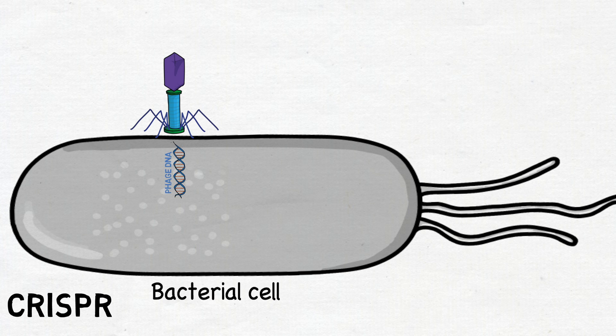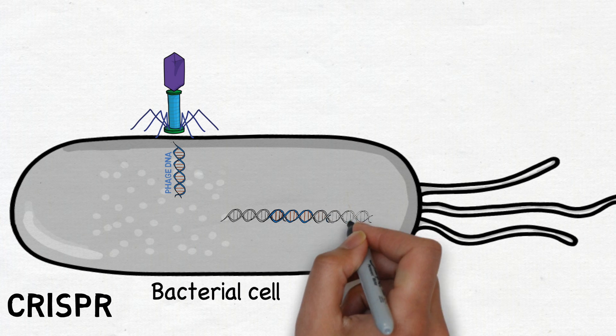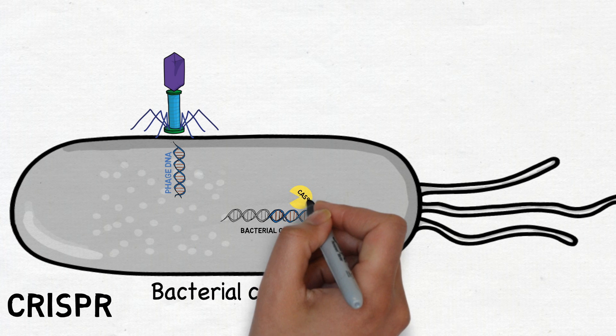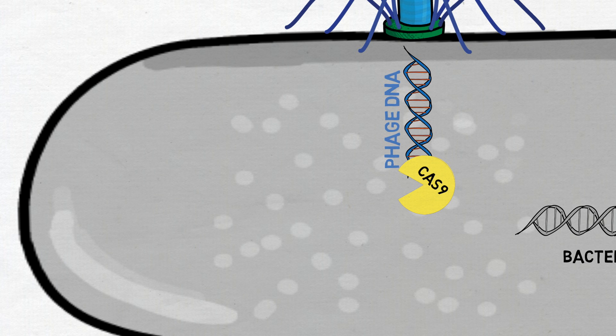CRISPR uses phage DNA sequences stored in a sort of genetic library to recognize phages when they attack. Copies of the DNA fragments stored in this library form complexes with the Cas9 nuclease protein. These complexes patrol the cell and destroy invading phages.